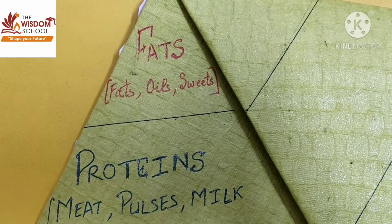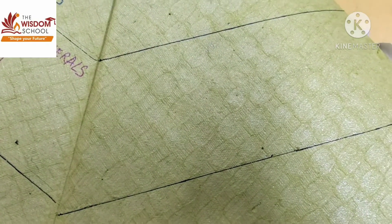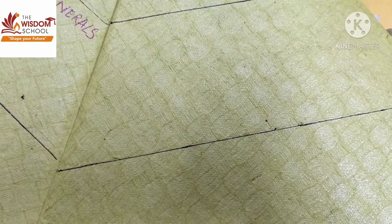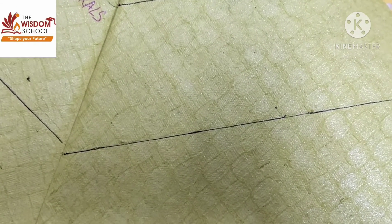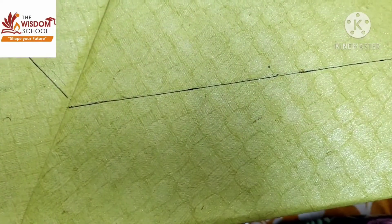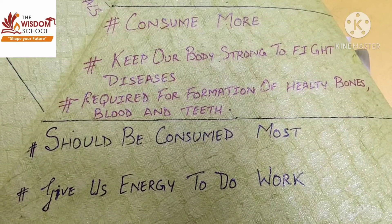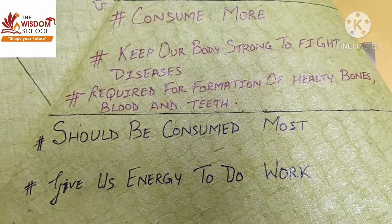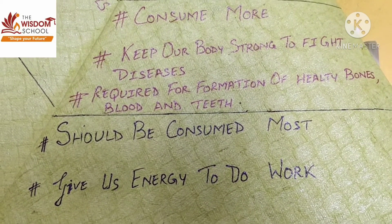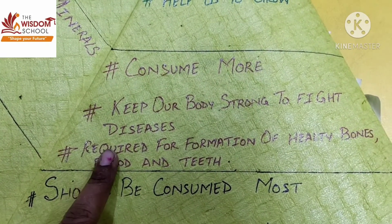Now let us move to our fourth section. In this part, we are going to write the functions of these essential components of food. For example, carbohydrates give us energy to do work. This is our fourth side of the pyramid — the bottommost part is carbohydrates.